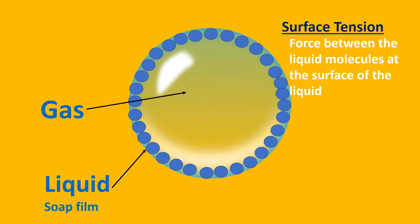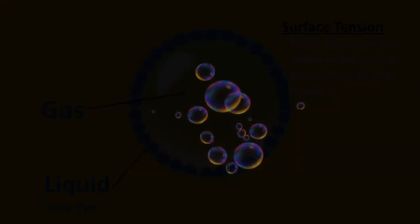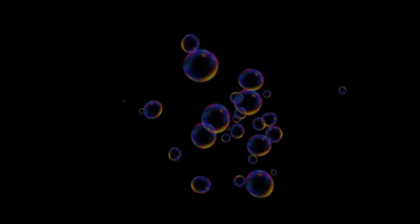The liquid molecules cling to each other, which causes the surface of the liquid to behave like an elastic sheet. When we blow air into the soap film, the soap film acts like a stretchy elastic membrane.